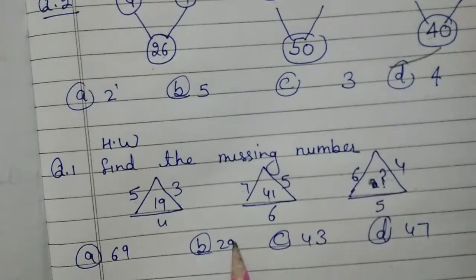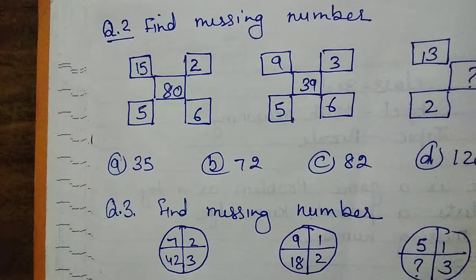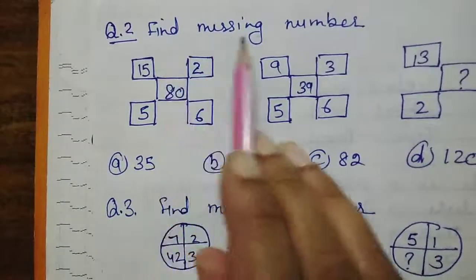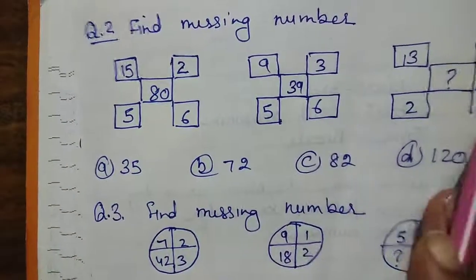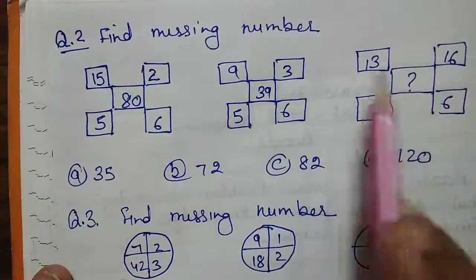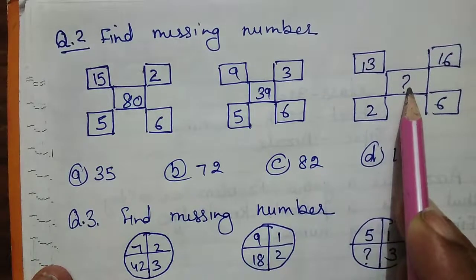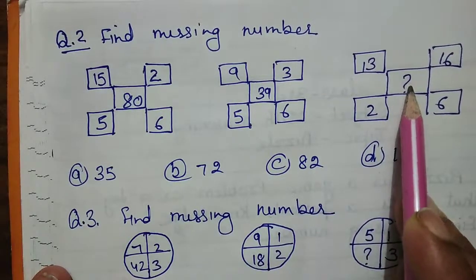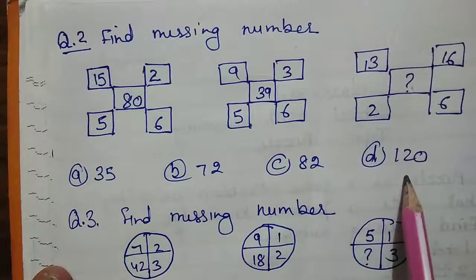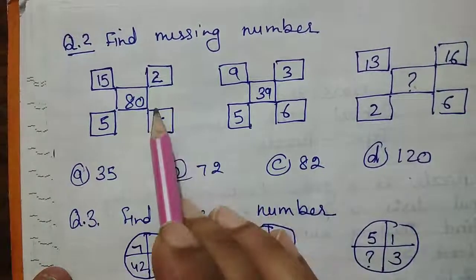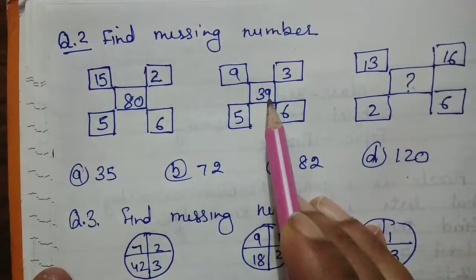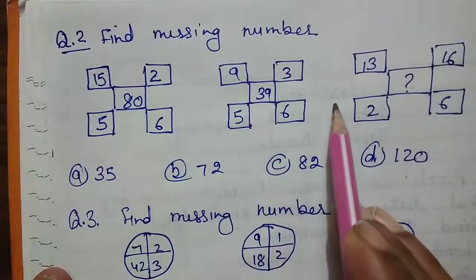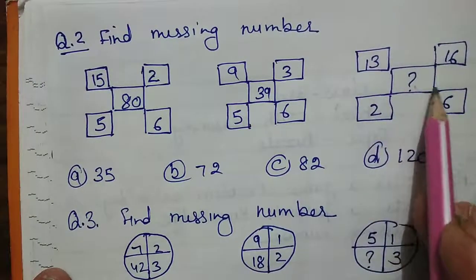Try this question by yourself. Now move to the second question of homework: find the missing number. A pattern figure is given to you and you have to find and select the correct option. First find the relation between the given figures, check whether it holds in the second, and with the same pattern try to find the missing number.